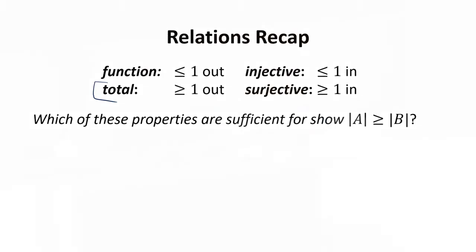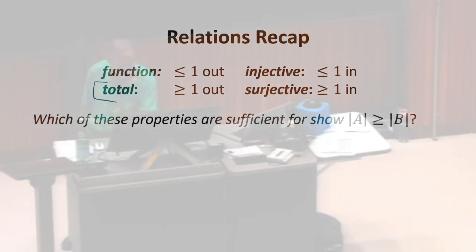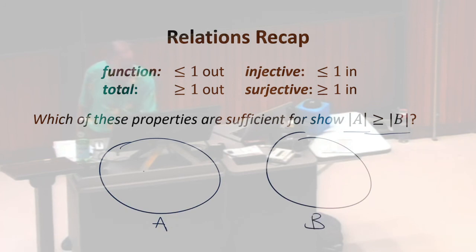It needs to be injective. Our goal is to show A is bigger than B. Actually, let's go back to the total question. Maybe I'm not so sure about it. Right. So the relations between A and B, our goal is to show A is bigger than B. So if we have some elements of A with no edges out of them, that's actually okay.